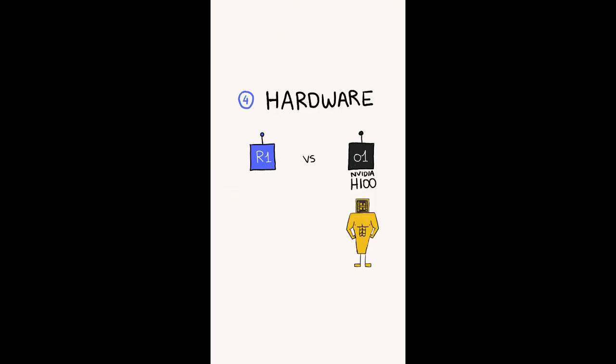Finally, the hardware. O1 was trained on NVIDIA's H100 GPUs, while DeepSeek used H800s, which are a modified and weakened version of the H100s, due to the US's export controls.